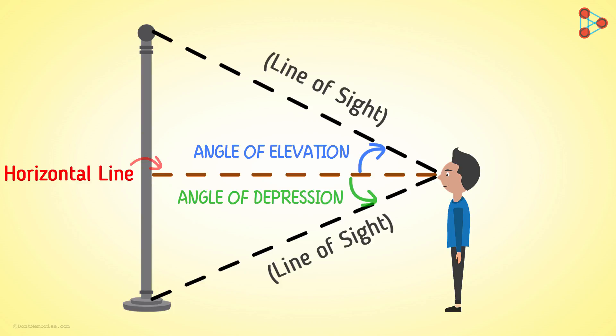Yes, when a person is looking down, angle formed by the line of sight with the horizontal is angle of depression. Here the line of sight is below the horizontal.